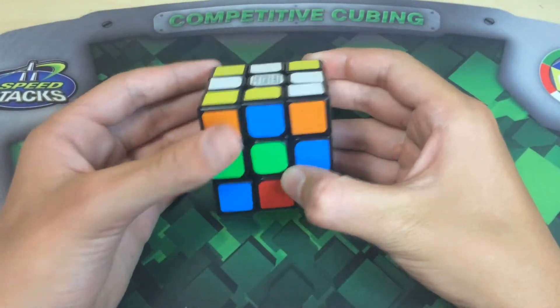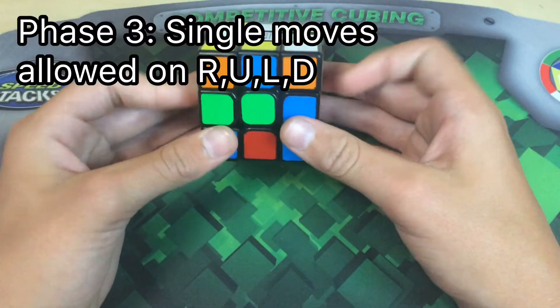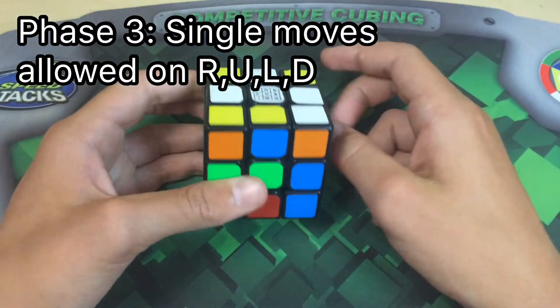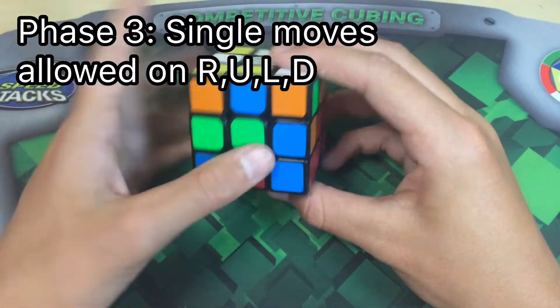And then in the next step, we're allowed to do single moves on the right and left sides and the top and bottom sides, but we're still forced to only use double moves on the front and back.